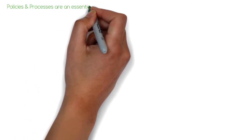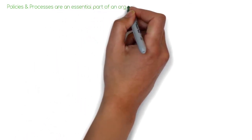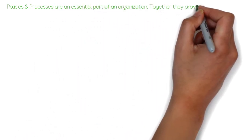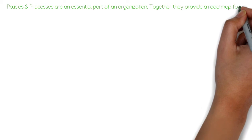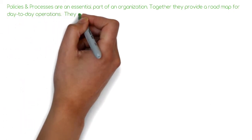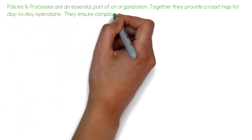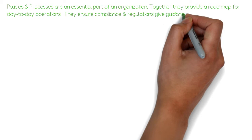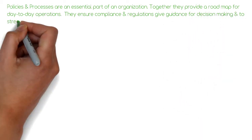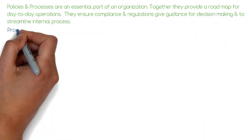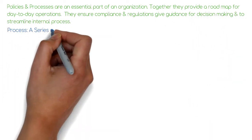Policies and Processes are an essential part of an organization. Together they provide a roadmap for day-to-day operations. They ensure compliance with regulations, give guidance for decision-making, and streamline internal processes.